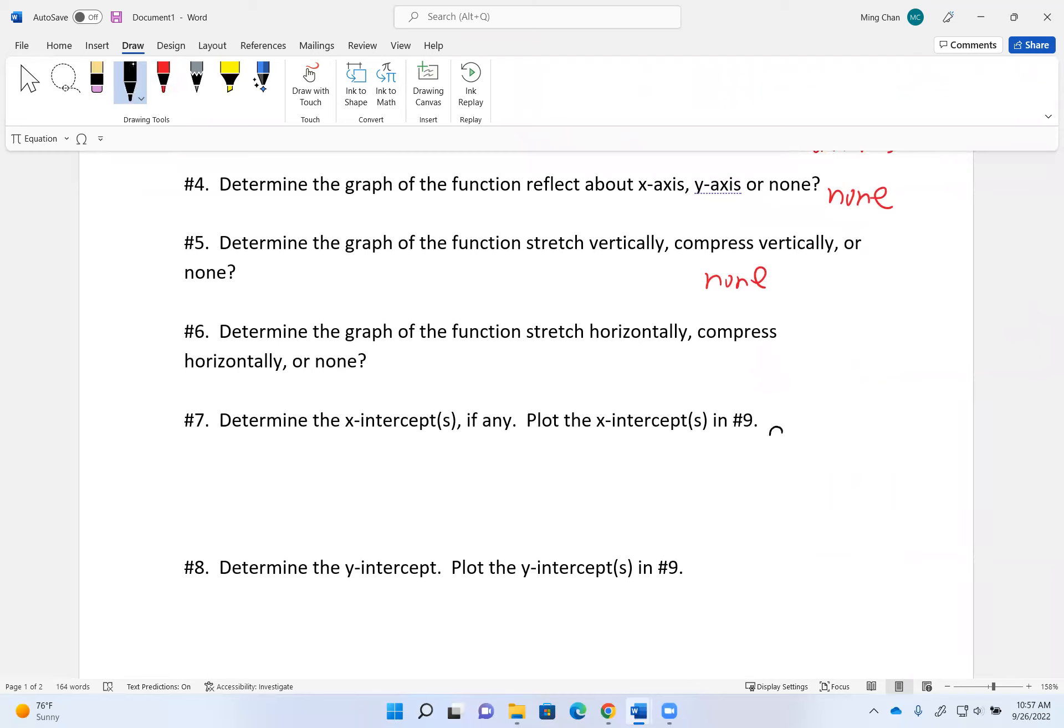My function started out with f(x) equals absolute value of half x plus 2 minus 3. I rewrote it as half times x plus 4 minus 3.